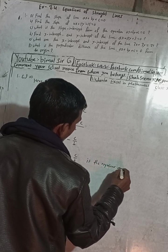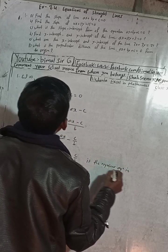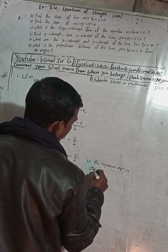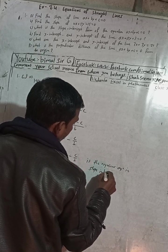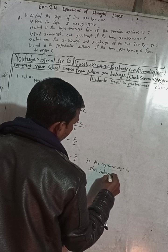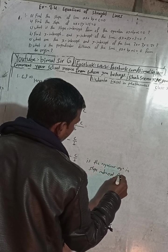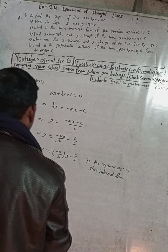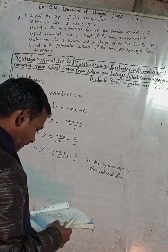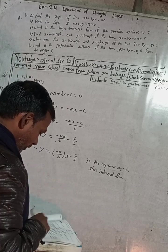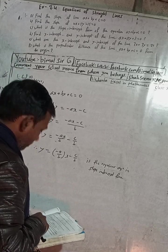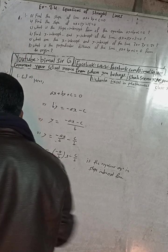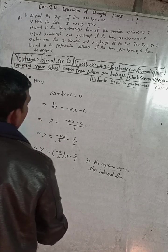This is the required equation in slope-intercept form. Checking against the book: the answer is y = (-a/b)x - c/b, which matches. Now part (d).